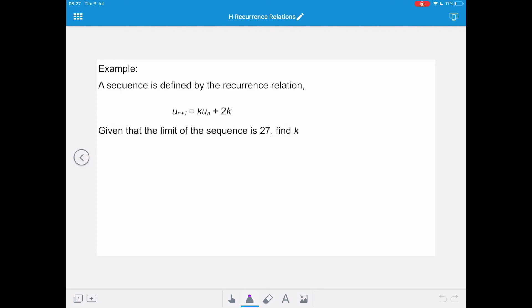Now, if we reach a limit, then that means that at some point, all consecutive terms will have a value of 27. And this is because the limit of the sequence is 27. And that means that un+1 and un in our recurrence relation are both going to have that value of 27, which is our limit L. So we can say that un equals un+1 equals L, which equals 27.